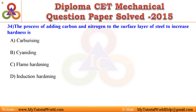Question 34. The process of adding carbon and nitrogen to the surface layer of steel to increase hardness is: A. Carburising. B. Cyaniding. C. Flame hardening. D. Induction hardening. Answer is: Cyaniding.